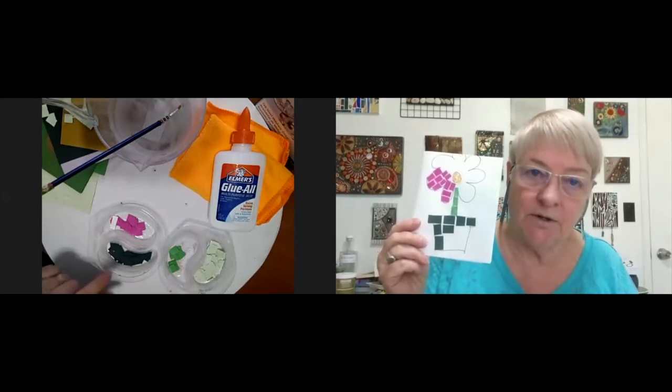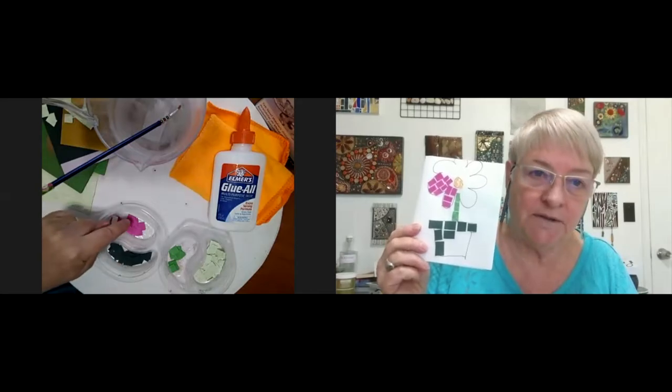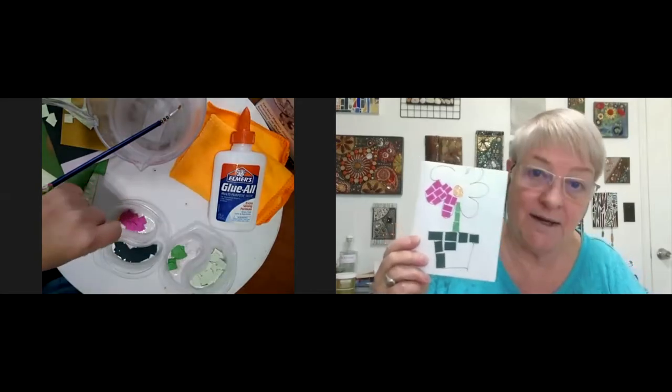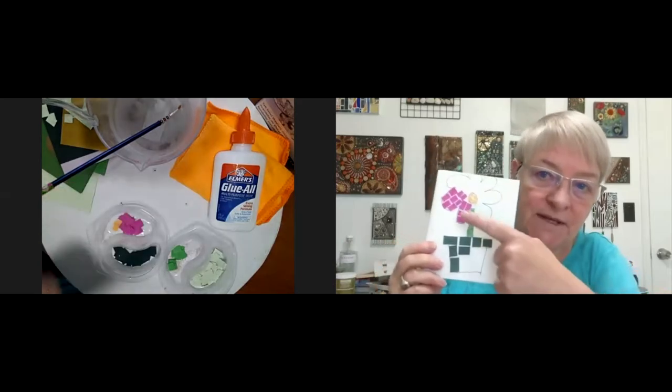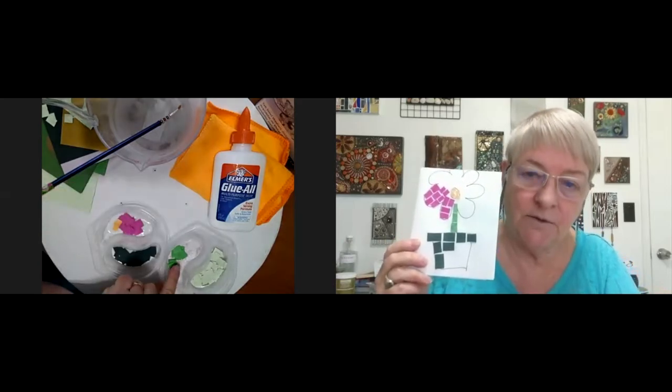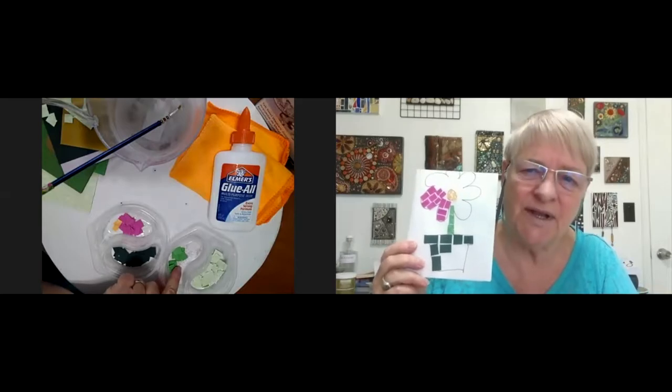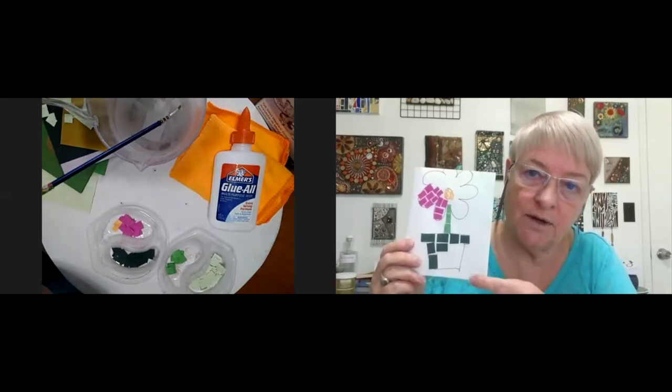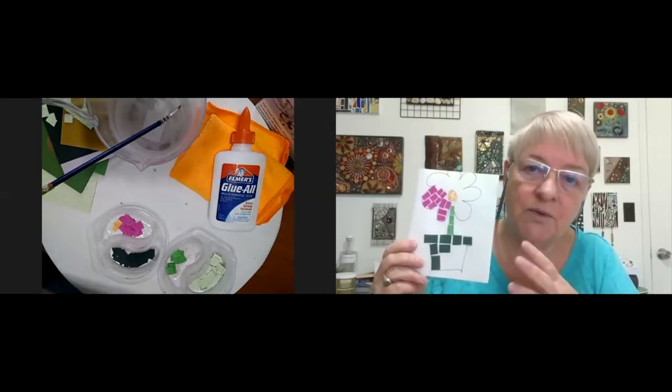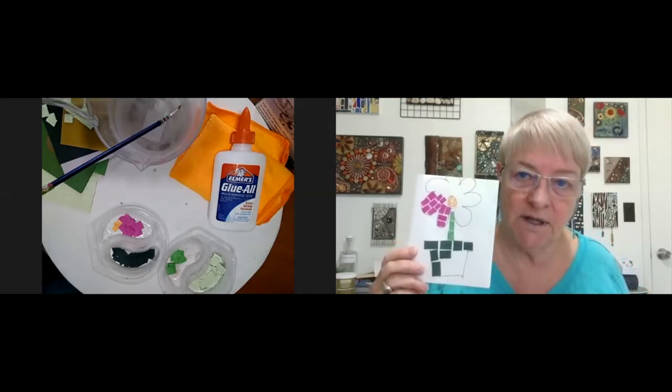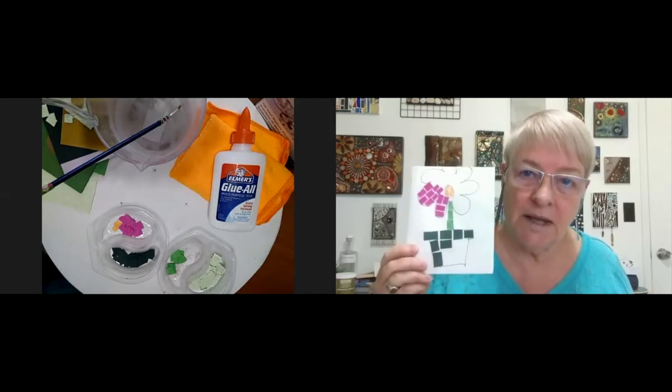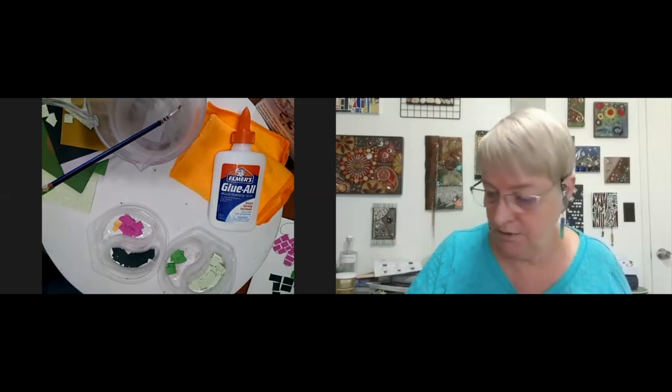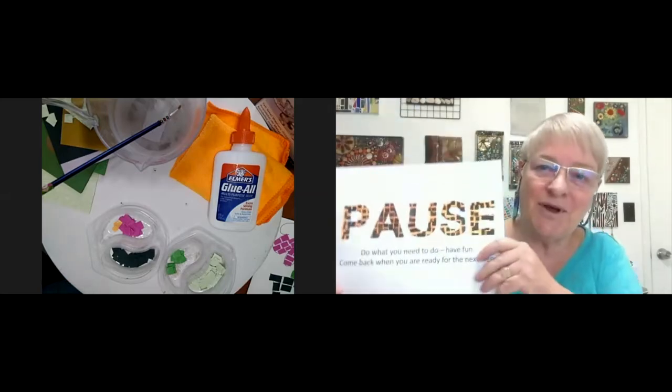So I had dark greens for the flower pot, and then I had hot pinks for the flower. And then I have little pieces of yellow for the center of my flower. And then I'm going to have light greens for the stem, medium green really. And then I'm going to have this other light green as a background. Because you know what? A mosaic only really looks like a mosaic if the entire piece is covered. So what I would like you to do now is to go ahead and prepare your substrate and prepare your tesserae. And we will take a quick pause.